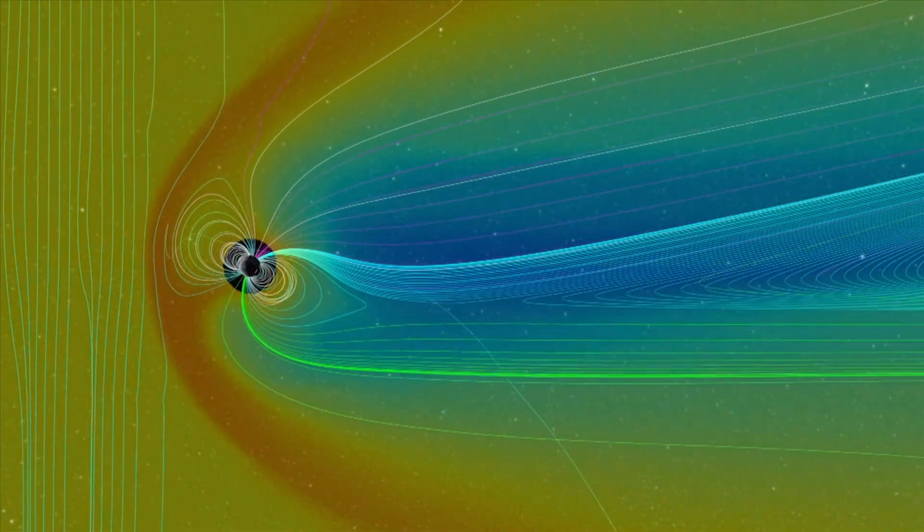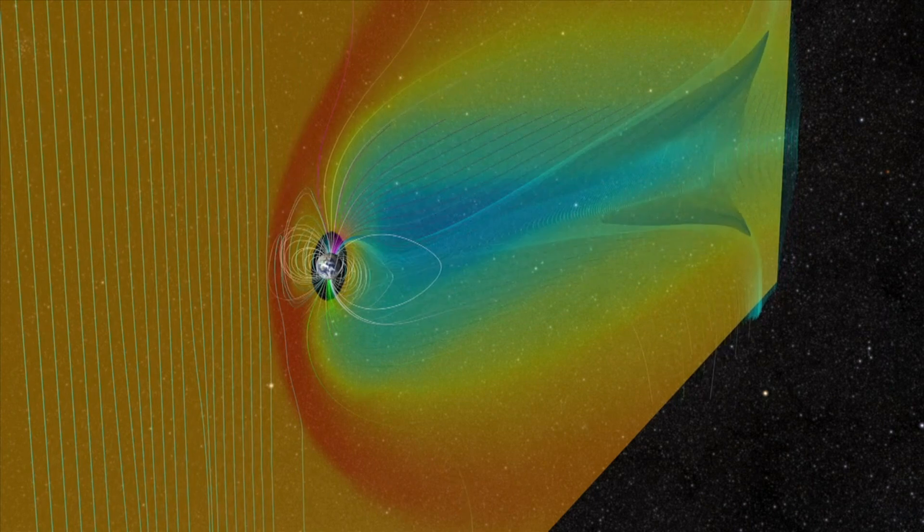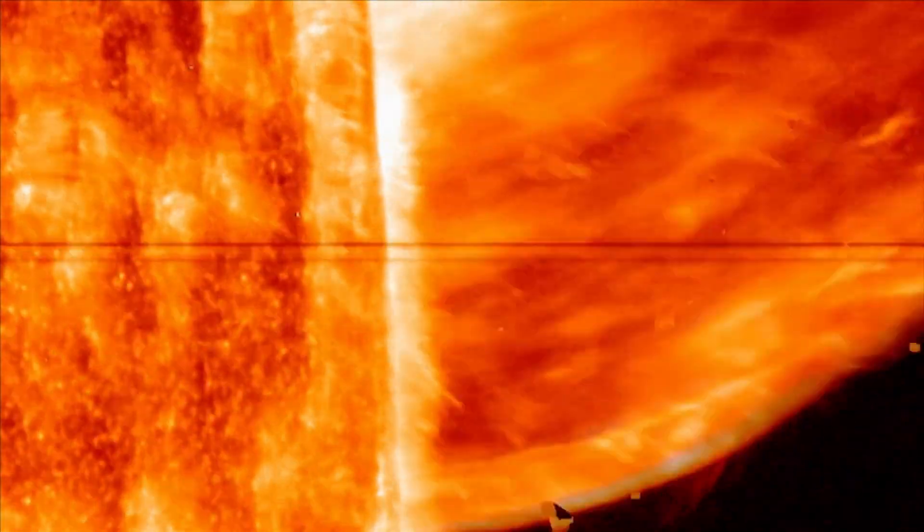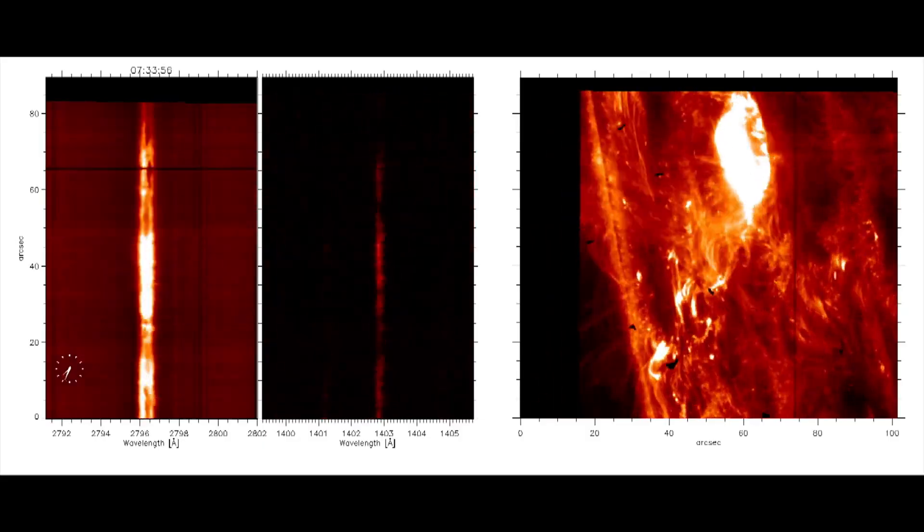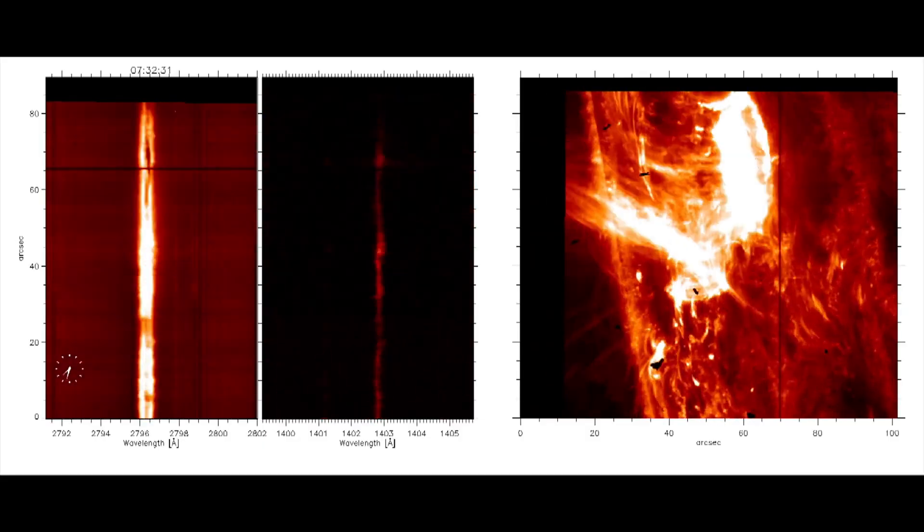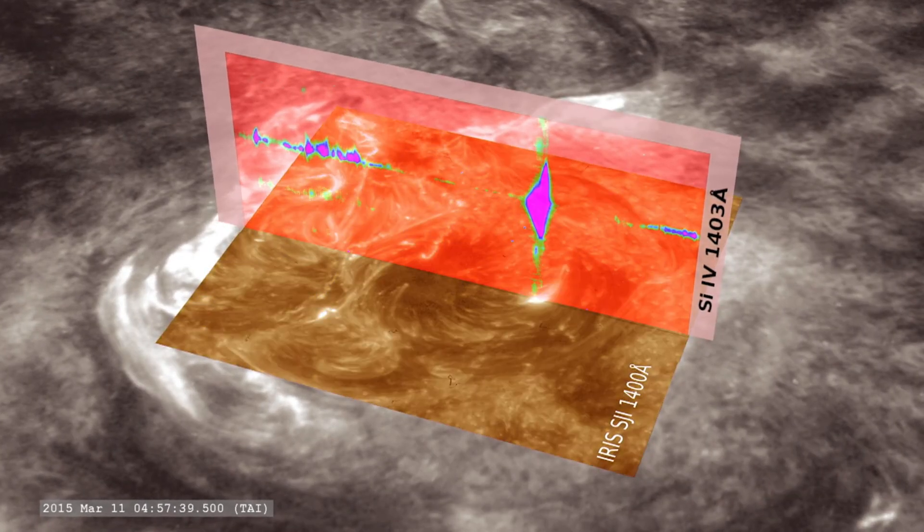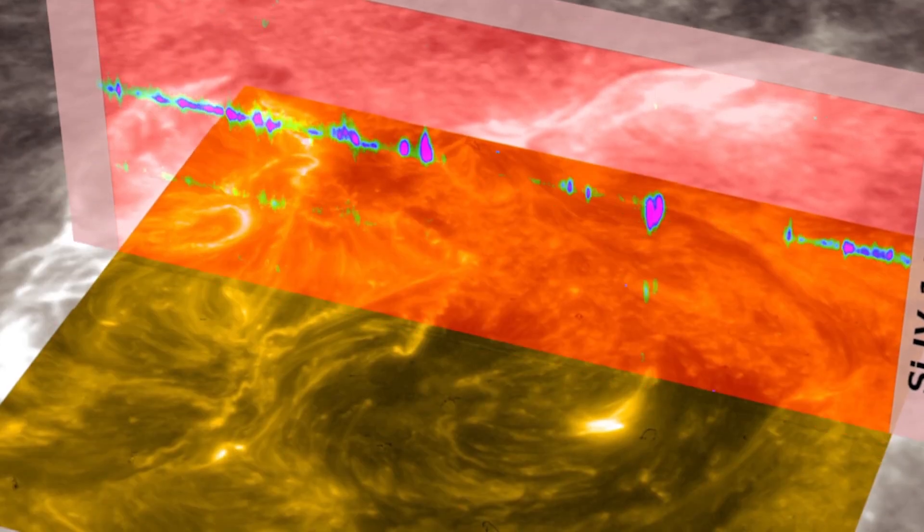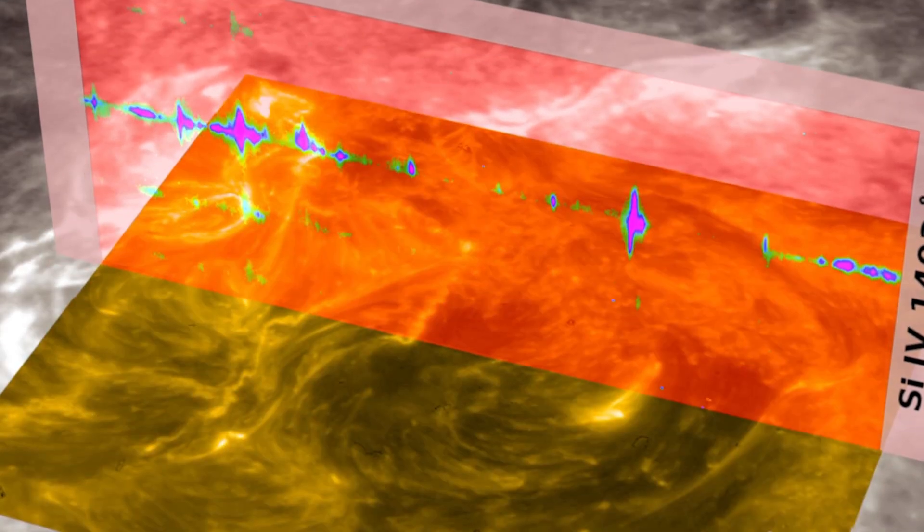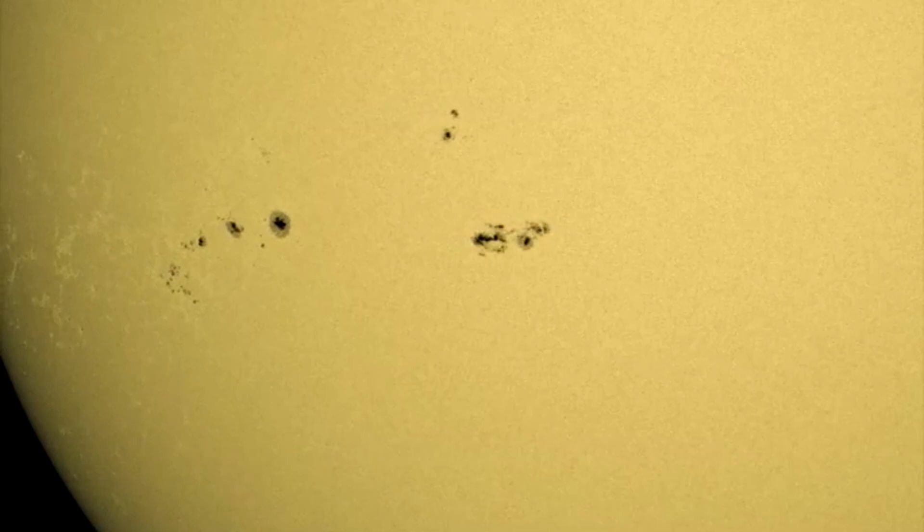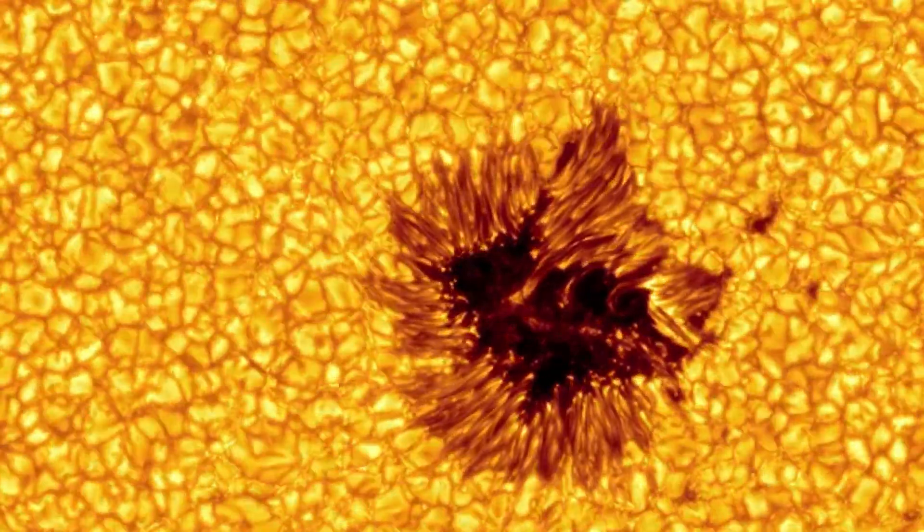But why are solar flares becoming more intense? The increase in solar flares and sunspots is part of the sun's natural cycle. Every 11 years or so, the sun's magnetic field completely flips, meaning the sun's north and south poles switch places. The solar cycle affects activity on the surface of the sun, such as the number of sunspots, which rises and falls. There are two main phases of the solar cycle.